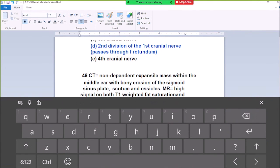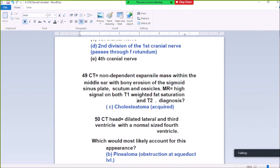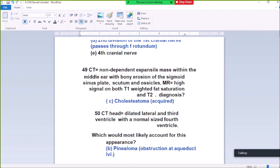Question 50. CT shows dilated lateral and third ventricles with normal size fourth ventricle. This is caused by obstruction at the aqueductal level. There will be dilated lateral and third ventricles with normal size fourth ventricle. This is caused by pinealoma causing aqueductal stenosis.